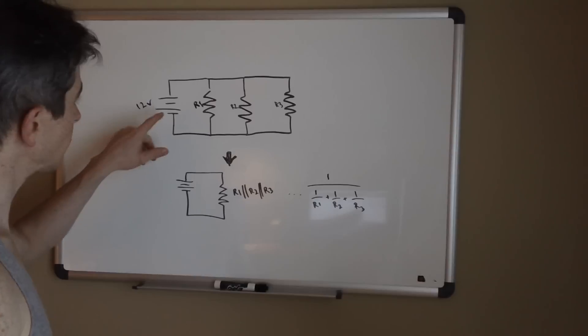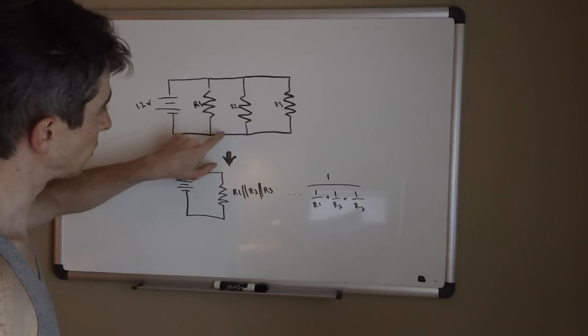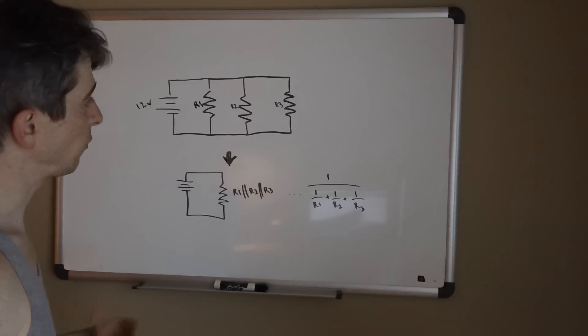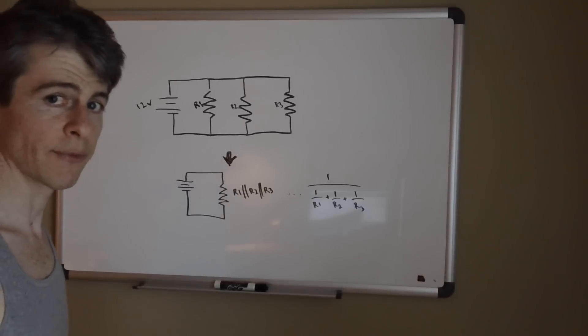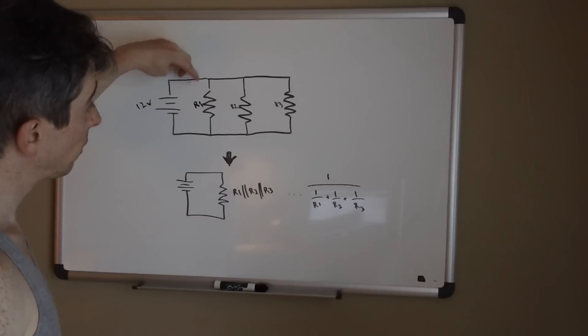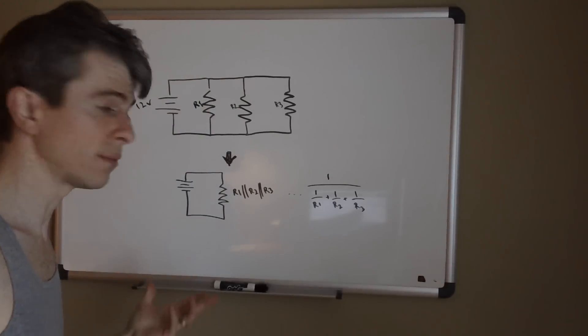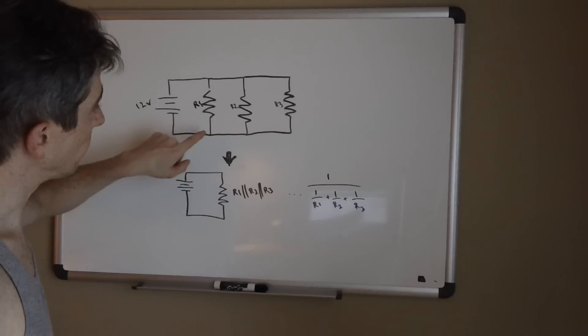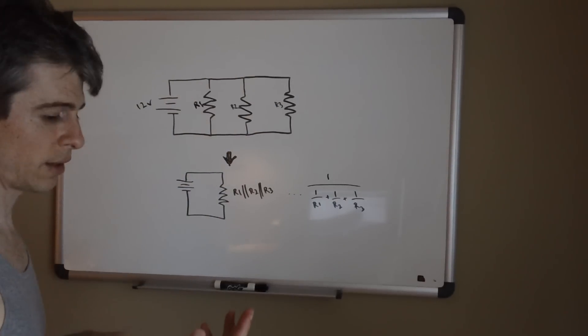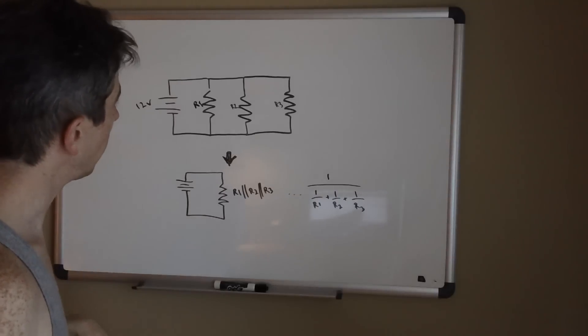Once you know that you pretty much have most of the variables available to you. So you know how much voltage was being applied to each branch, and you would know that in total you had 3 amps current flowing through the circuit. Since we know that these are all equal in this particular case, you would know that each one of these branches would be basically accounting for 1 amp.